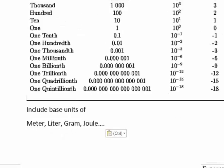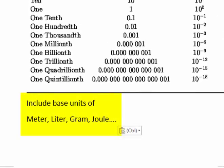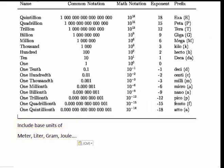Within the metric system, there are a number of base units. They include meter, liter, gram, joule, etc. These prefixes in the table are placed in front of the base units to come up with different units in the metric system, such as kilometer, milliliter, kilogram, centigram, centimeter, and kilojoule.